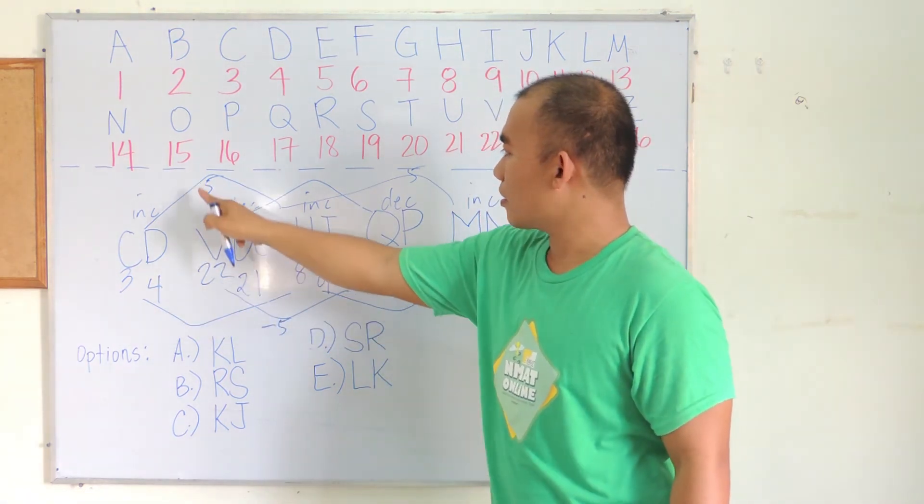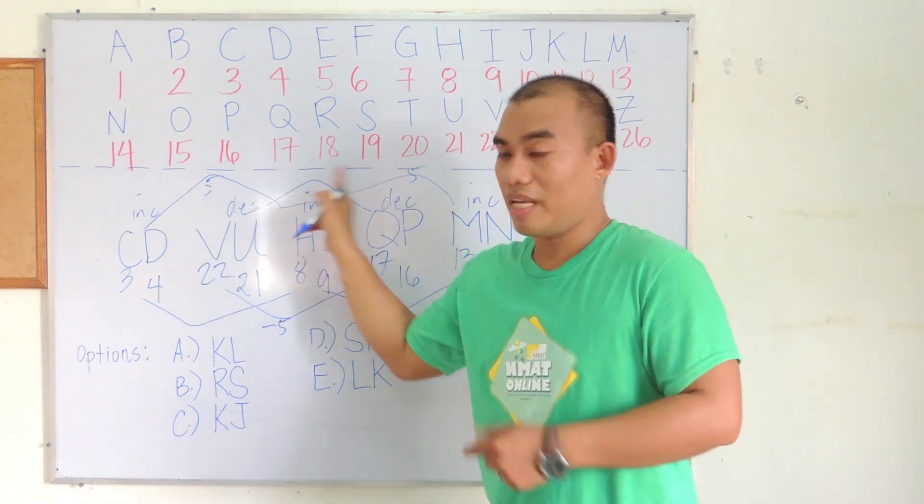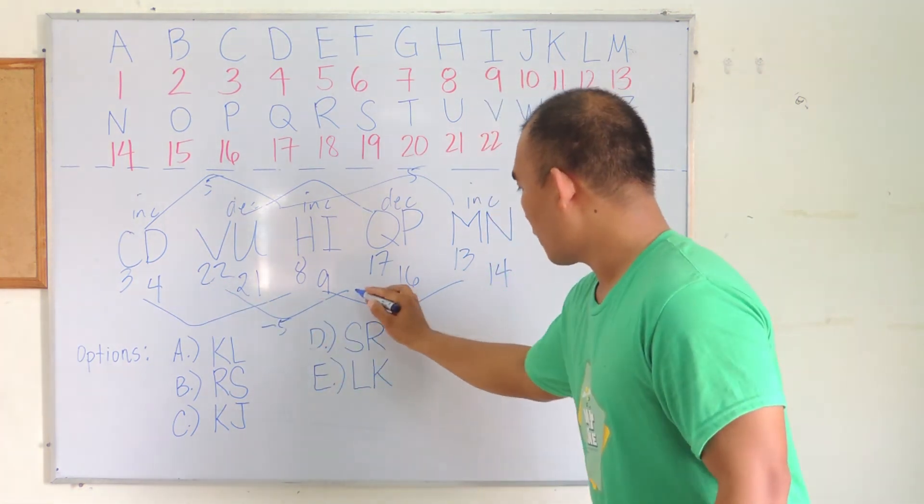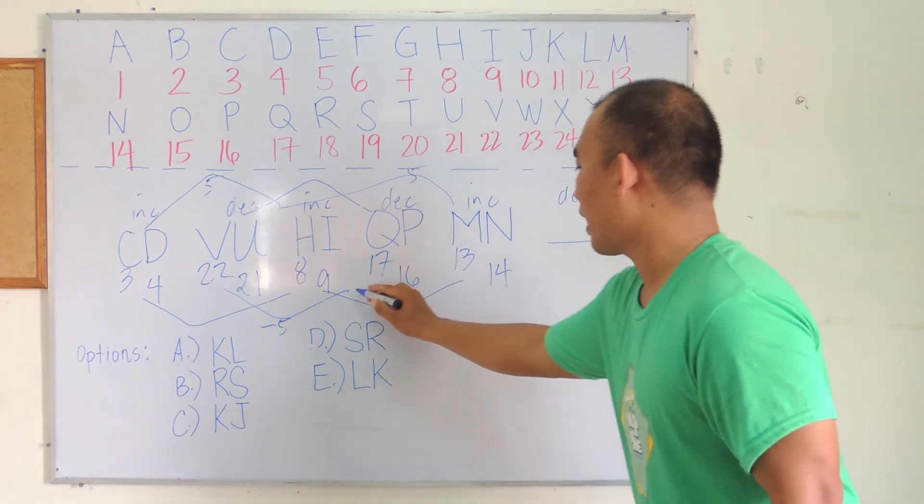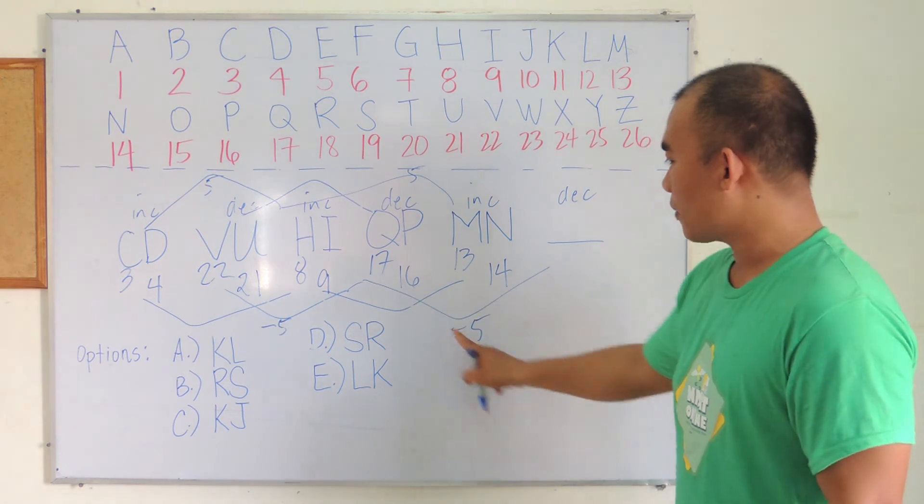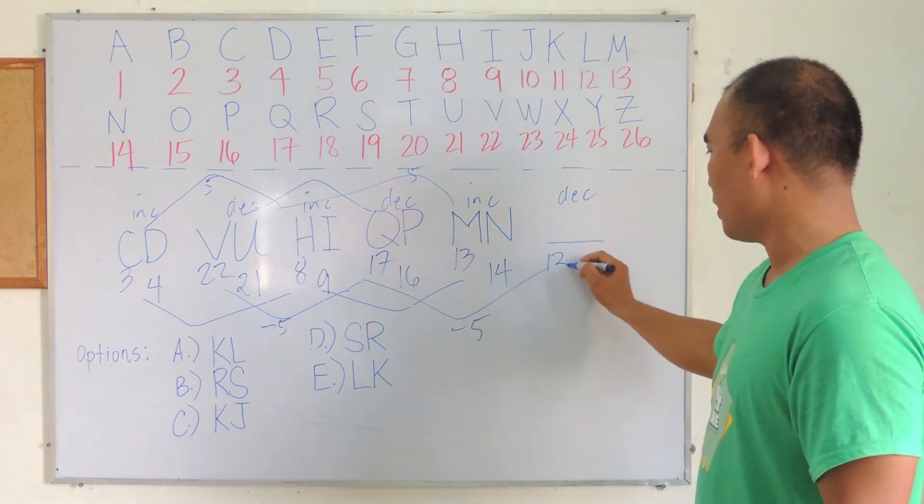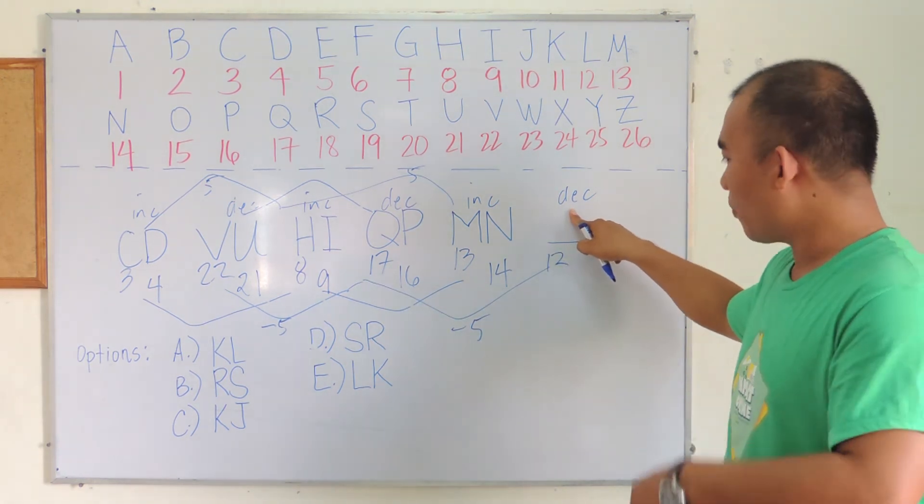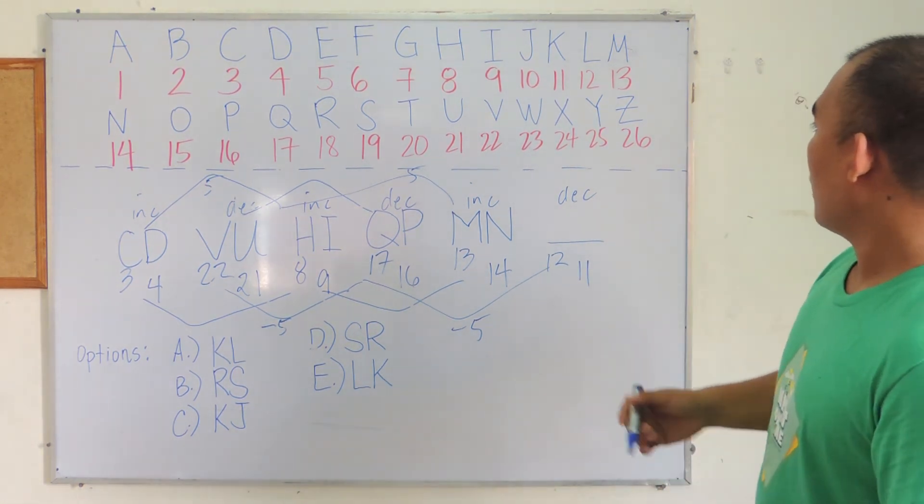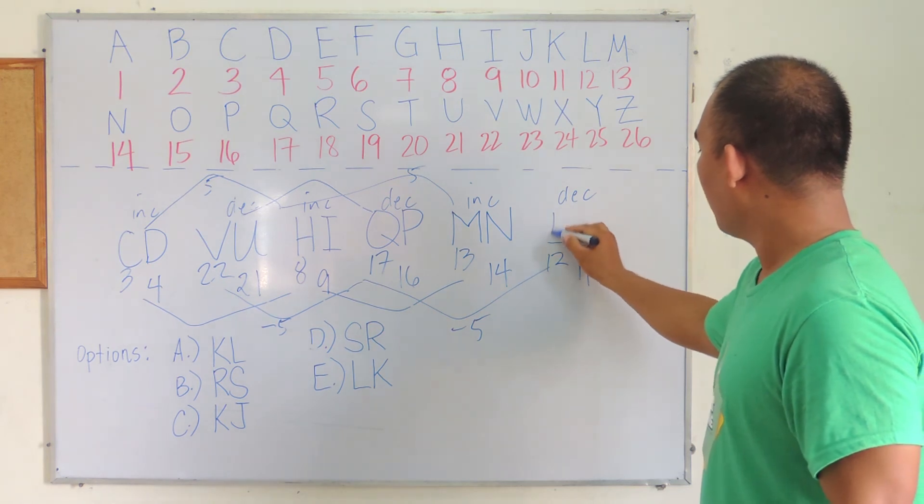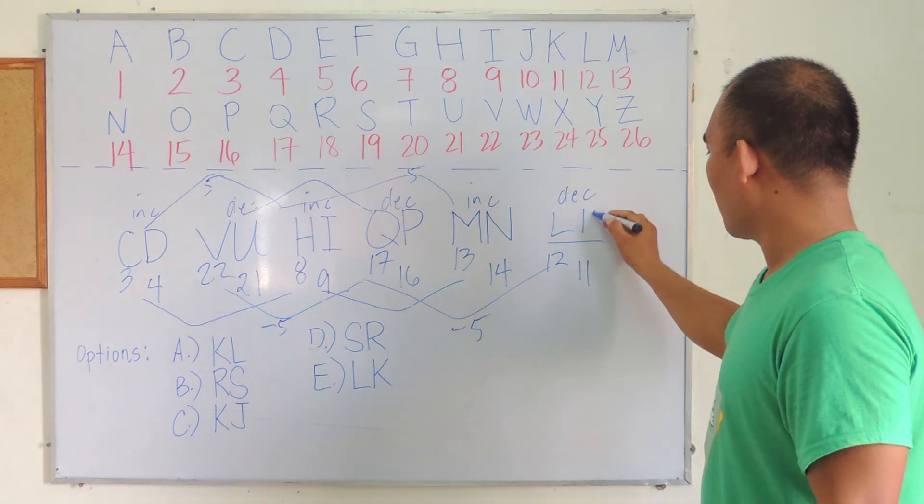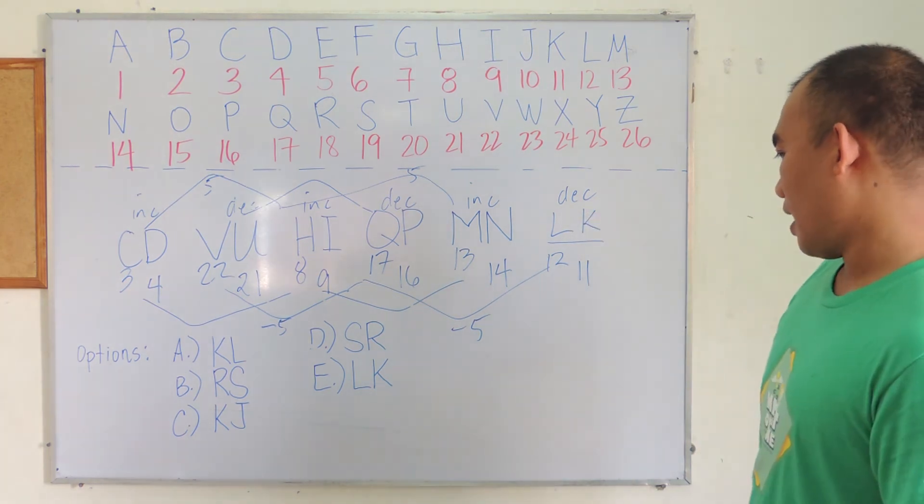So below, we're going to apply minus 5, and then another minus 5. And that is 17 minus 5, we have the 12th letter. Since it's decreasing, decrease by 1. 12 minus 1 is 11. We have 12 as L, 11 is K. So the answer is LK, and that is option E.